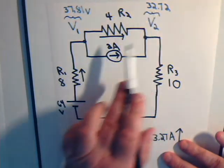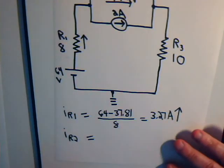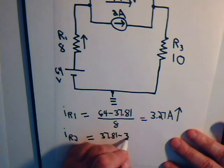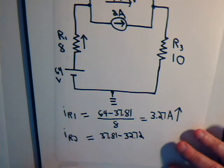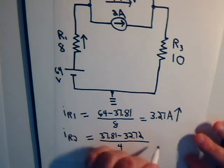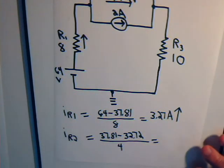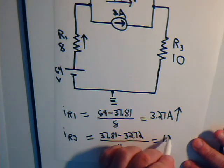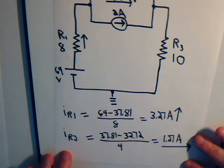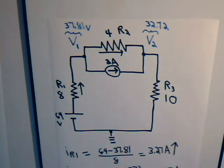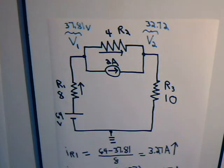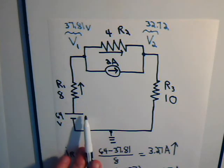The magnitude of this current will be 37.81 minus 32.72 divided by the resistance of 4 ohms. Put that on the calculator, and that's 1.27 amps going to the right through that resistor.